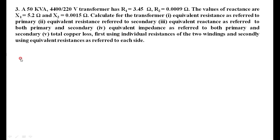The third numerical: a 50 kVA, 4400/220 volt transformer has R1 equals 3.5 ohm and R2 equals 0.0009 ohm. The reactances are X1 equals 5.2 ohm and X2 equals 0.0015 ohm for primary and secondary respectively. Calculate: equivalent resistance referred to primary (R01) and secondary (R02); equivalent reactance X01 and X02; equivalent impedance Z01 and Z02; and total copper losses using both individual and equivalent resistance.